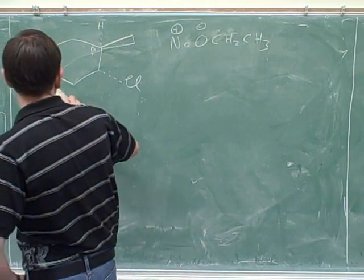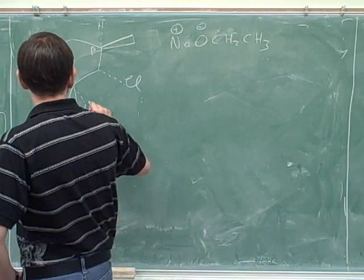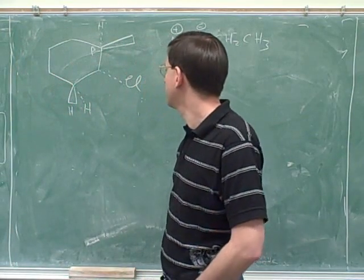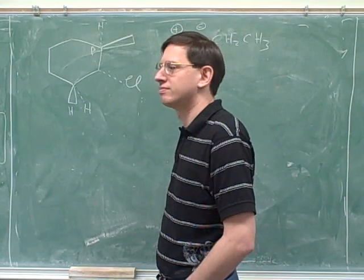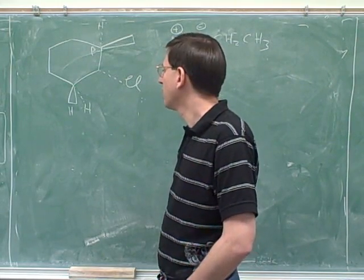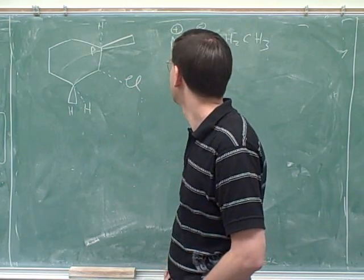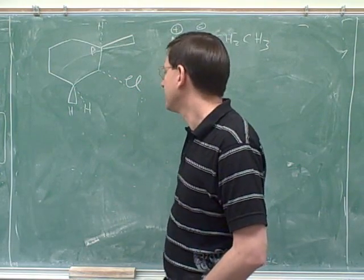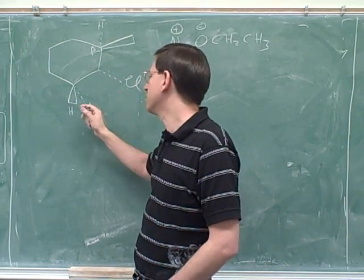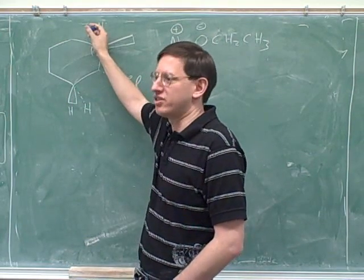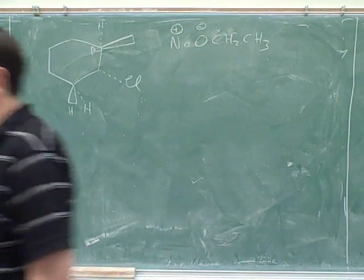To be more precise, there are really two hydrogens here - which one is the base going to take? It can only take a hydrogen that's anti to the chlorine, so it's going to take the one that's coming out at us. This one is pointing up and this is pointing down, so these can be anti to each other. That's the reason we didn't attack the other hydrogen - because it was not pointing anti. So let's show the mechanism for that and the products.